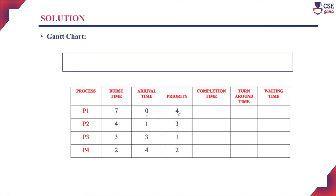Since there are no other processes at time 0, we initially choose process P1 and assign it to the CPU for execution. Process P2 will be available in the ready queue only at 1 millisecond. So the Gantt chart starts at 0 milliseconds with process P1. Since this is non-preemptive priority scheduling, until process P1 completes its execution it will not leave the CPU. The burst time for process P1 is 7 milliseconds, so P1 will execute for 7 milliseconds.